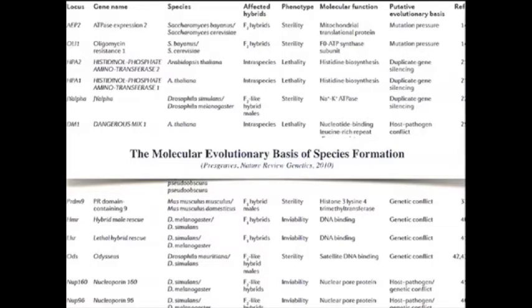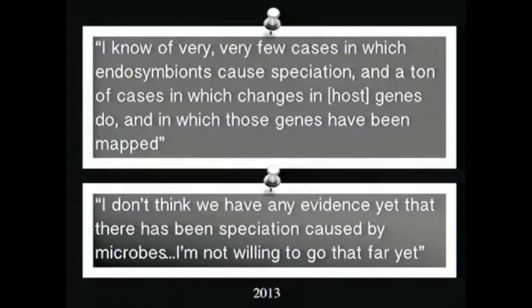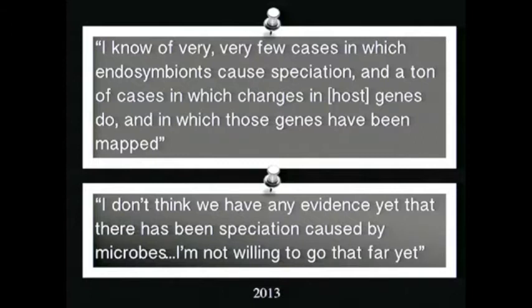This is a typical summary from the speciation field, where very often the focus is on speciation genes in the nucleus — what types of genes and phenotypes cause reproductive isolation. It's very rare to see a review that considers microbes in this discussion. Even as far as 2013, some prominent biologists in developmental and evolutionary biology were saying things like: 'I know of very few cases in which endosymbionts cause speciation, and a ton of cases where changes in host genes do.' Others said: 'I don't think we have any evidence yet that speciation has been caused by microbes.'